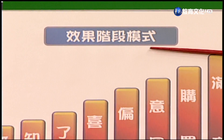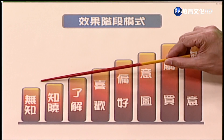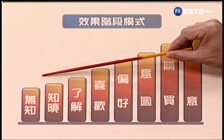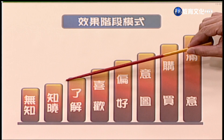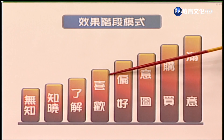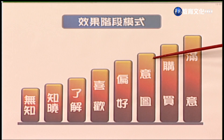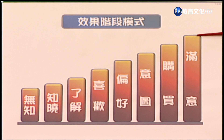接下来我们就要谈到第二个步骤，就是确定沟通的预期效果。沟通的对象一确定之后，我们必须要决定沟通所要达到的效果到底是什么。在行销沟通里面，我们是希望把消费者从第一个阶段一直推到最后的购买阶段。这个过程包含了八个阶段：首先是无知的阶段，接着要让消费者知晓这个产品，然后让消费者了解产品的利益，接着让他喜欢这个产品，在各个品牌之中形成对我们品牌的偏好，然后产生购买的意图，接着让他采取购买的行动，最后购买之后还希望他能够维持对我们产品的满意。